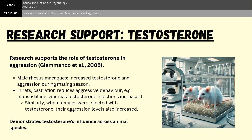One strength of hormonal explanations for aggression comes from research with non-human animals. Giamaco et al. in 2005 conducted a review highlighting the role of testosterone in aggressive behavior. They found that male rhesus macaque monkeys showed an increase in both testosterone levels and aggression during mating seasons. Similarly, they found that castrating male rats reduces their testosterone levels and also decreases their tendency to kill mice, reducing their aggression. When female rats were injected with testosterone, their tendency to kill mice increased. These studies clearly show how testosterone influences aggression across different animal species.